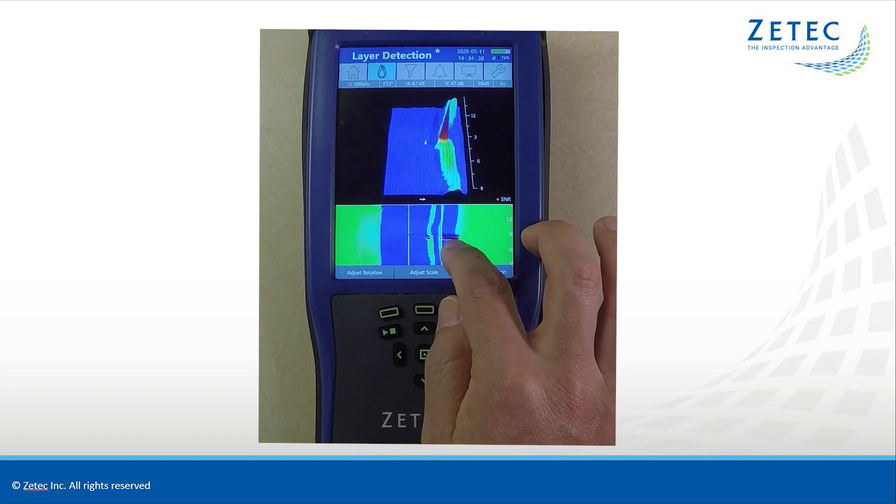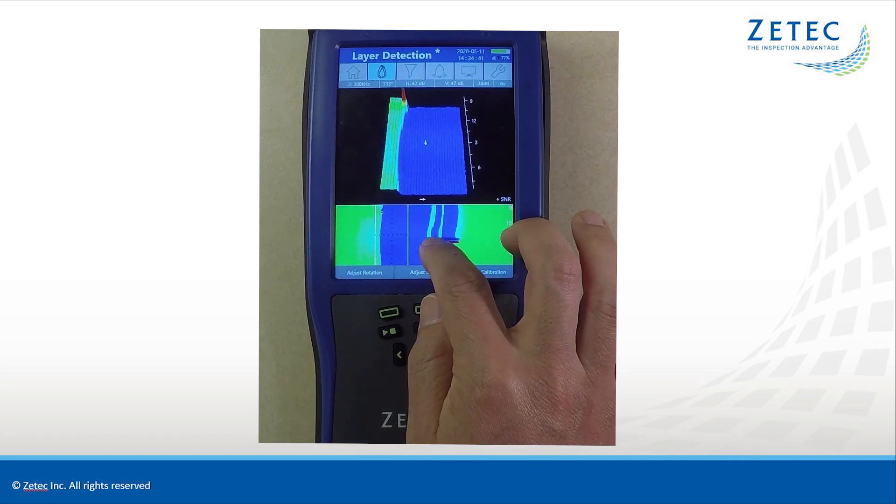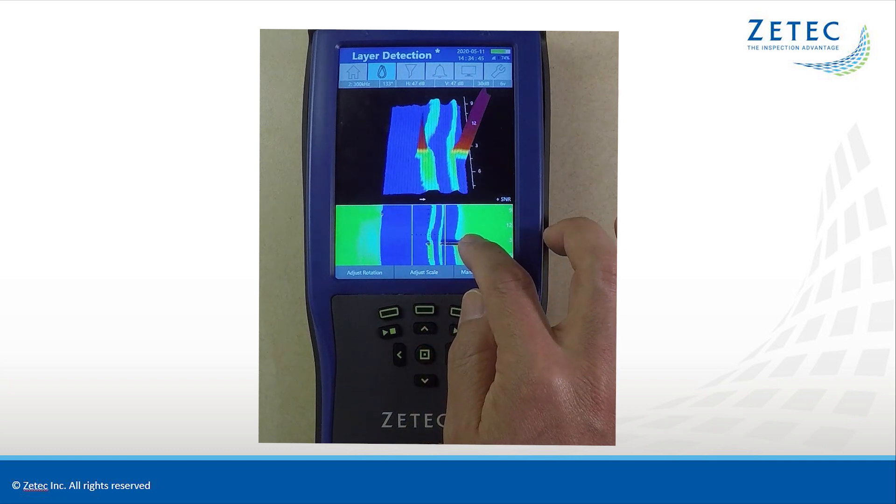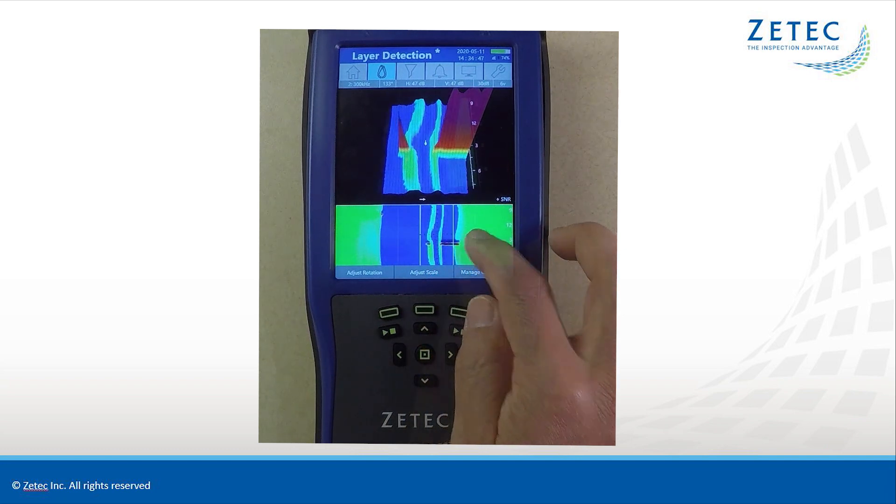With a single scan, you can quickly determine if the flaw is in a critical layer. With this information, more informative decisions can be made on if and how any repairs should be made.